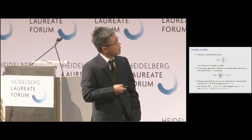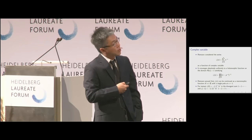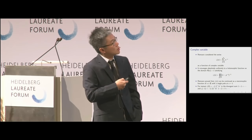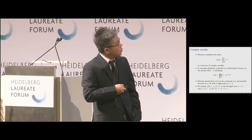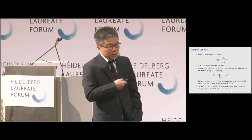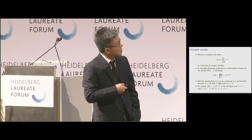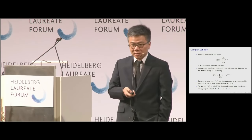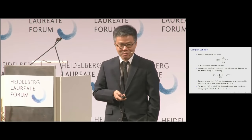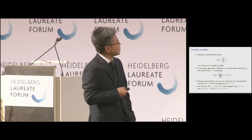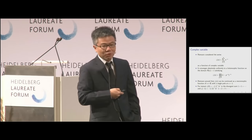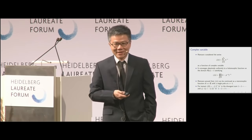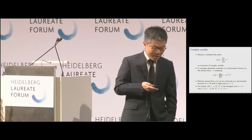Of course, 1+1+1+... doesn't make sense literally. But if you compute the value of the analytically continued function, you get zeta of 0 equal to minus one half. So in the Riemann sense, 1+1+1+... equals minus one half. And it gets even more amusing: 1+2+3+... equals minus one twelfth. Anyway, that's a famous identity.